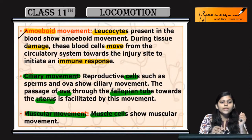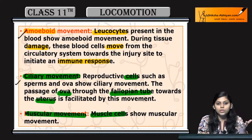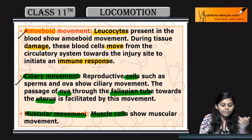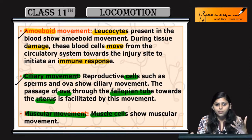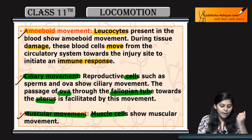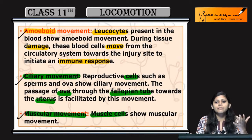To summarize: the amoeboid movement is shown by the leukocytes, the ciliary movement is shown by the reproductive cells, and the muscular movement is shown by the muscle cells.